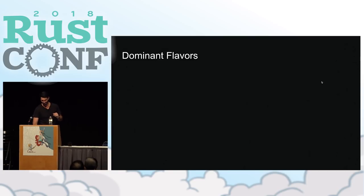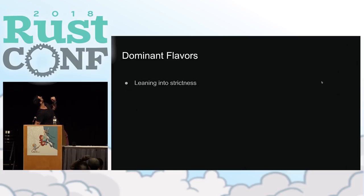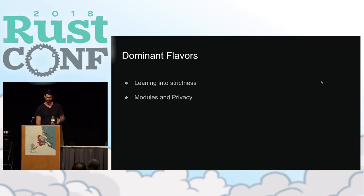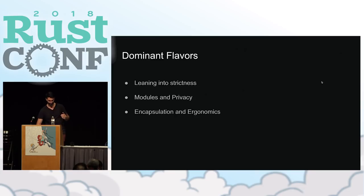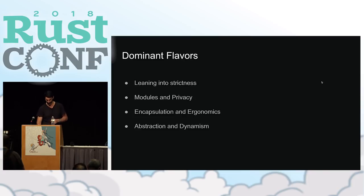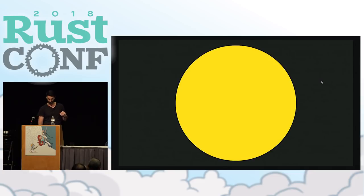So what am I going to talk about? I'm going to talk about leaning into strictness — the fact that Rust is difficult, everybody knows, but having to think about our APIs gives us the ability to clarify our thought. I'm going to talk about using modules and privacy to keep our code simple, encapsulation and ergonomics, and abstraction and dynamism, because abstraction is the last rung of the totem pole. To start, I'm going to introduce you to my dominant metaphor: it is an onion.